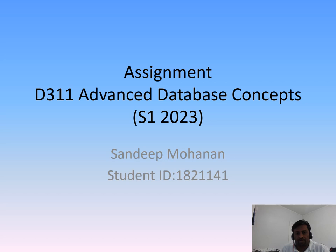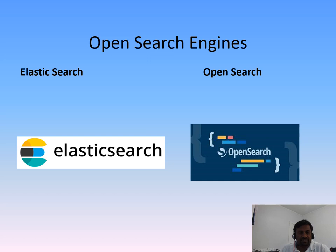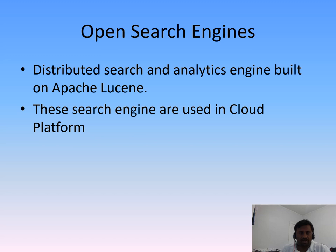Hi, today I am presenting a paper on different open search engines. Number one is Elasticsearch, the most popular search engine, and the other is OpenSearch, promoted by Amazon Web Services. This is a recently promoted open search engine. Both are open source search engines.